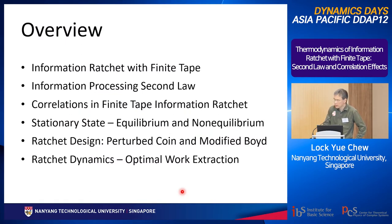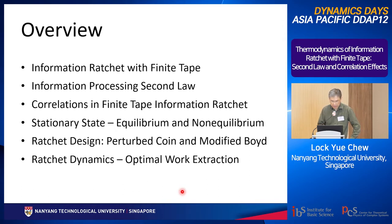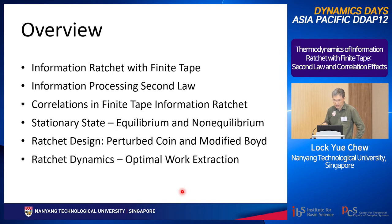The overview of my talk: first I will discuss what an information ratchet with finite tape is and how it operates. Then I bring in the information processing second law and how it describes the physics behind the information ratchet. Then I discuss correlations, which are very important in extracting work. I go on to discuss the stationary state, where we see how equilibrium and non-equilibrium states appear. Finally I cover the ratchet design, giving two designs — Perturbed Coin and Modified Boyd — and show how we extract optimal work.